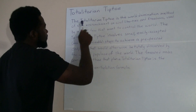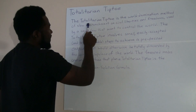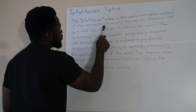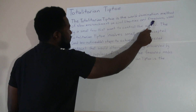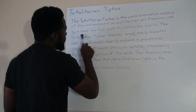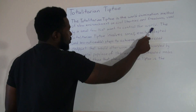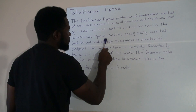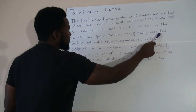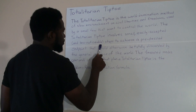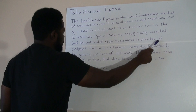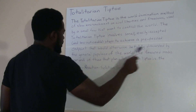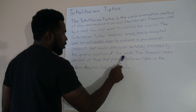Totalitarian Tiptoe. The totalitarian tiptoe is the world domination method of slow encroachment on civil liberties and freedoms used by a small few that want to control the world. The totalitarian tiptoe involves small, easily accepted, and less noticeable steps to achieve a pre-desired endpoint that would otherwise be totally discarded by the general populace of the world.